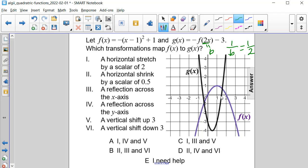And notice how with g(x), it is skinnier than f(x). So that does make sense. So it looks as though 2 is our starting point, that horizontal shrink by a scalar of 1/2.